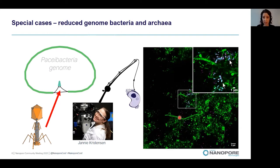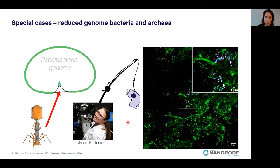At about 6% relative abundance, Jenny designed FISH probes using the 16S gene. Another cool finding was that this organism had a closed circular genome, but it was closed both with and without a small fragment of about 40 kilobase pairs — which turned out to be a phage genome. So half of this population was actually infected by this phage. In the FISH image you can see very small cells, which is expected because many in this phylum are considered to be syntrophs or parasites.